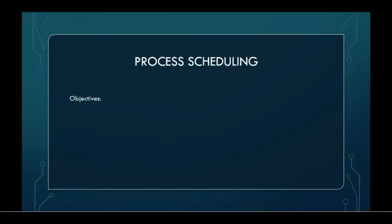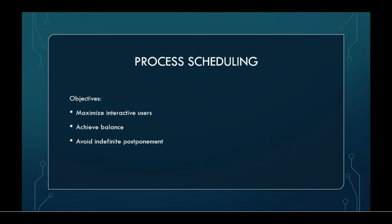The objectives of process scheduling are to maximize interactive users within acceptable response times, achieve a balance between response and utilization, avoid infinite postponement, enforce priorities, and give preference to the processors holding the queue resources.